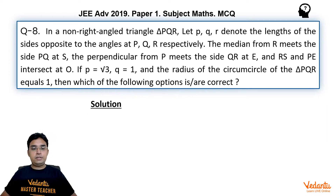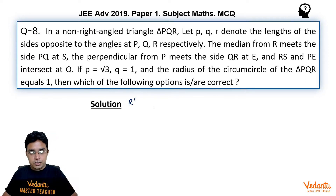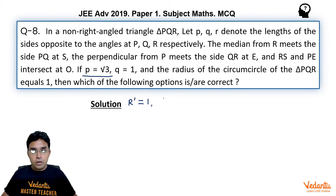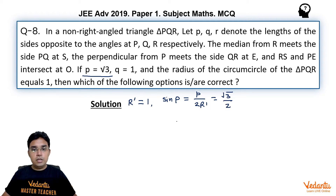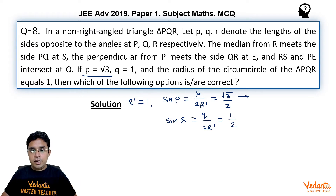We are given triangle PQR with circumradius R' = 1 (I use R' since capital R is already used). Using the sine rule: sin P = p / (2R') = √3 / 2, and sin Q = q / (2R') = 1/2. These give us P = 60° or 120°, and Q = 30° or 150°.